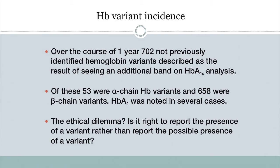Over the course of one year, we found 702 previously unidentified hemoglobin variants, discovered as a result of seeing an additional band on A1c analysis. Of that 702, 53% were alpha chain variants, and we also found hemoglobin A2 prime — found in black populations — on several occasions.